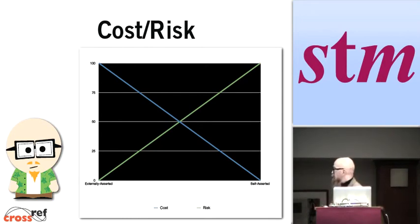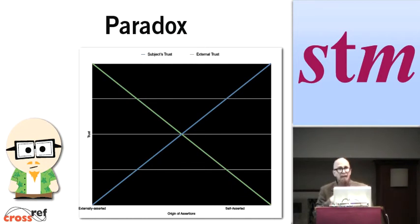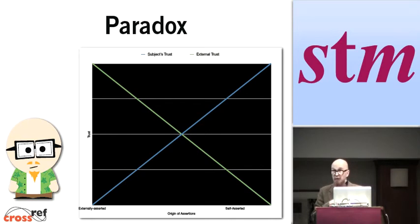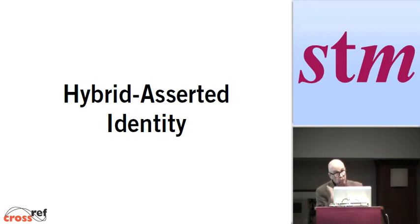Now there's a paradox associated with this. And that is that I, as a subject, have more trust in self-asserted identity than in externally asserted identity. Meanwhile, everybody else probably has more trust in externally asserted identity on me than my self-asserted identity. So there are all sorts of trade-offs here. That's why I want to talk about another kind of identity, which is a hybrid of self and externally asserted identity.